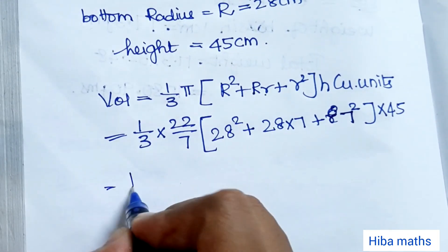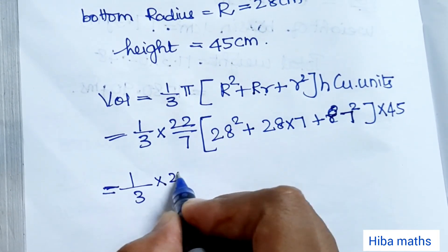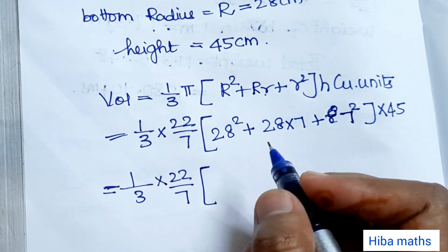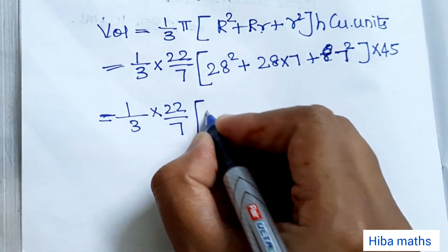Now 1 by 3 into 22 by 7 into 28 into 28, this solves to 784.